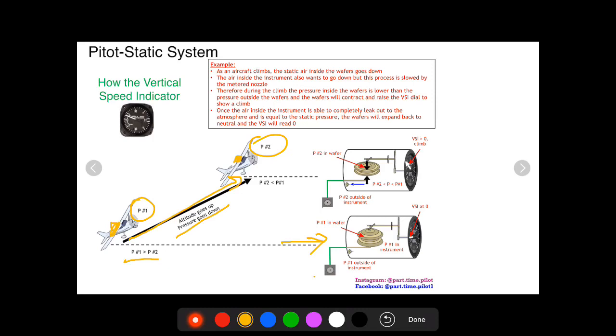So down here at pressure one before the climb, we have pressure number one going inside and filling up the wafer. So you have pressure number one inside the wafer. You also have pressure going in through this metered nozzle into the instrument. So the aircraft is stable—let's say you're circling at an altitude. So this wafer is not going to move, the VSI is going to be at zero. Now, up here during your climb, you're going to be at a higher altitude, so your pressure is going to go down—pressure number two is going to go down. So because now pressure number two outside the instrument is lower than pressure number one, the air inside the wafer is going to go out of the static source and then until you reach pressure number two in the wafer.